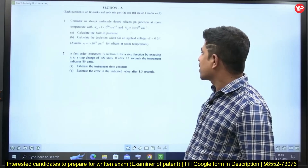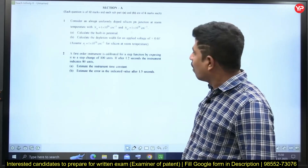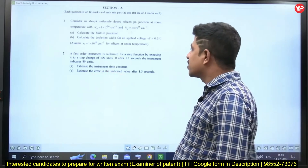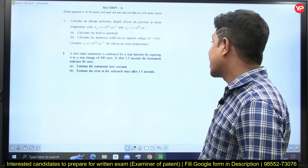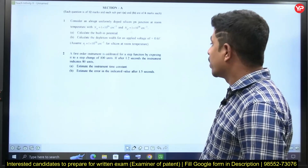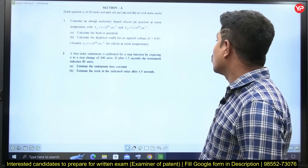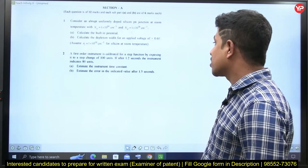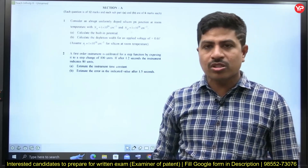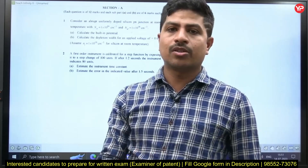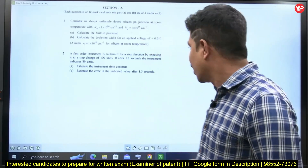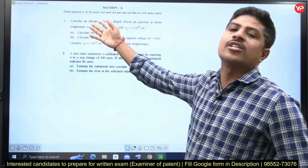The second question: a first-order instrument is calibrated for a step function by exposing it to a step change of 100 units. After 1.2 seconds, the instrument indicates 80 units. Estimate the instrument time constant. Many people, by looking at the question, feel this is from measurements, but no — the question is about time constant.